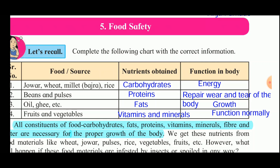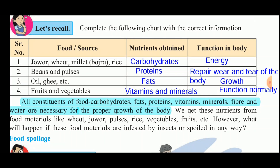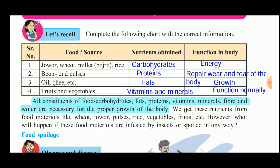The next is fruits and vegetables. Fruits and vegetables consist of vitamins and minerals, which are required for the body to function normally. So we have seen that we get nutrients from food materials like rice, wheat, jowar, pulses, vegetables, fruits, etc.